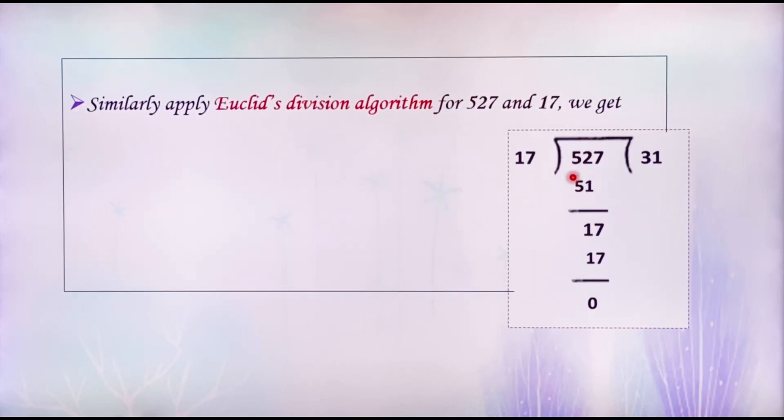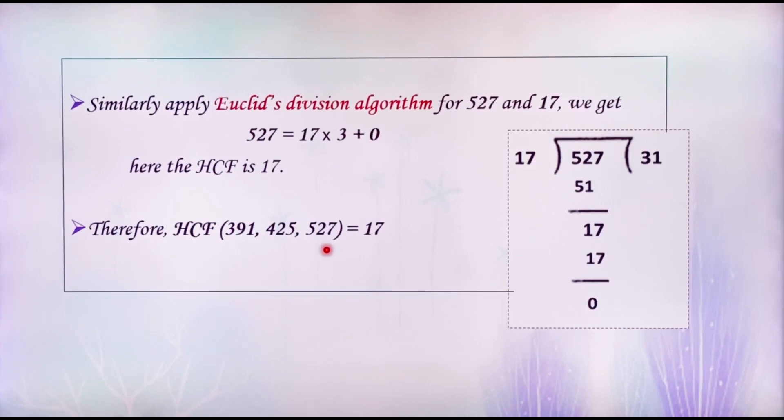After that, divide 527 by 17. We get 527 equals 17 into 31 plus 0. Now, the HCF of 527 and 17 is 17. So, the HCF of 391, 425 and 527 is 17. Hence, the required number is 17.